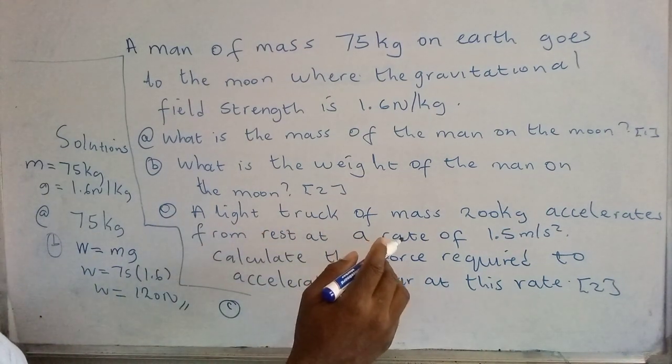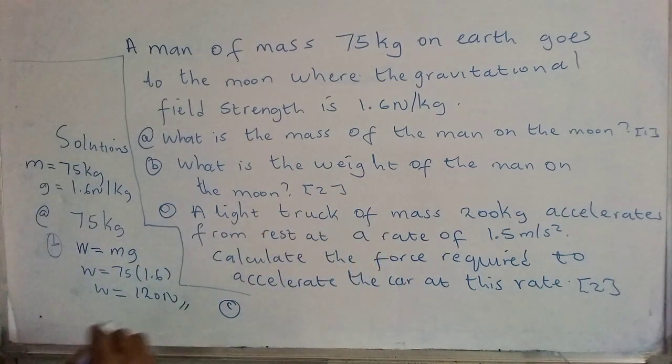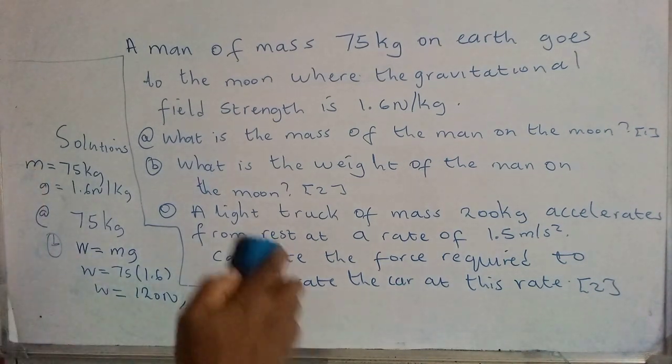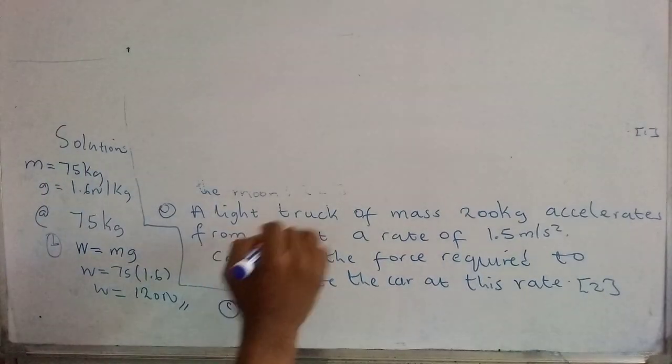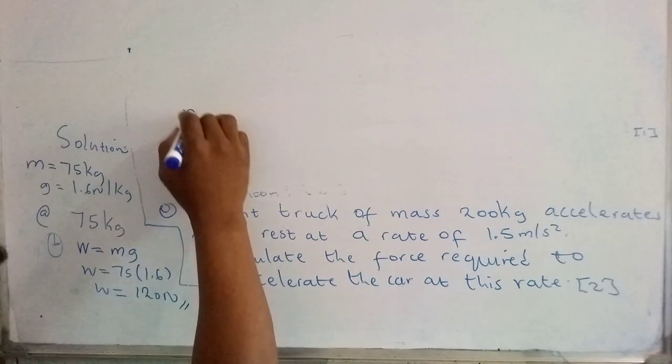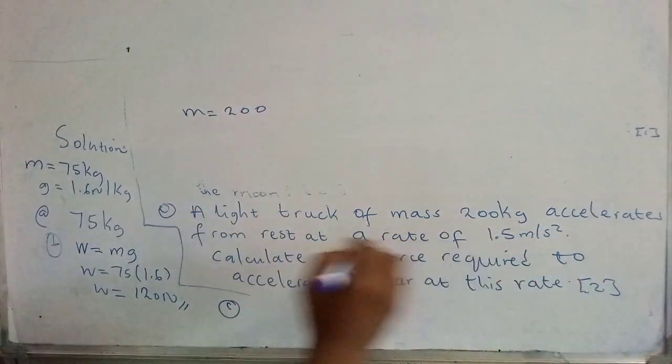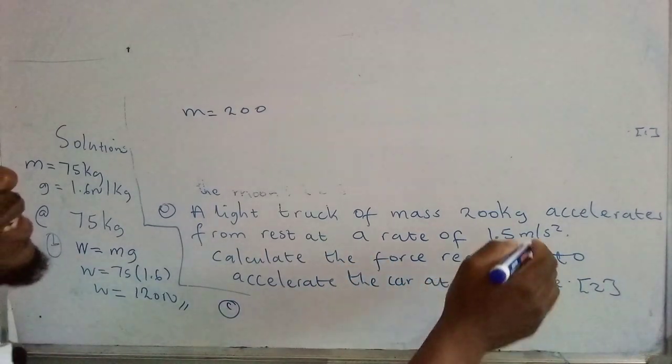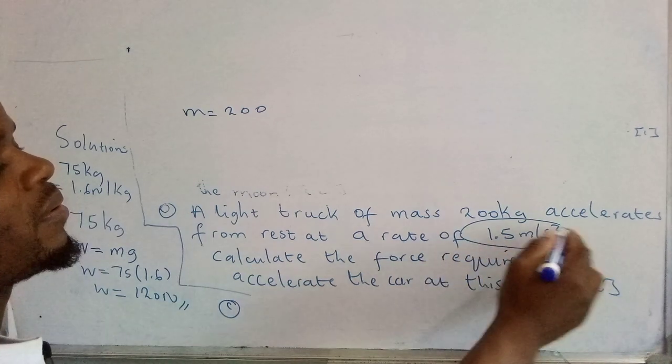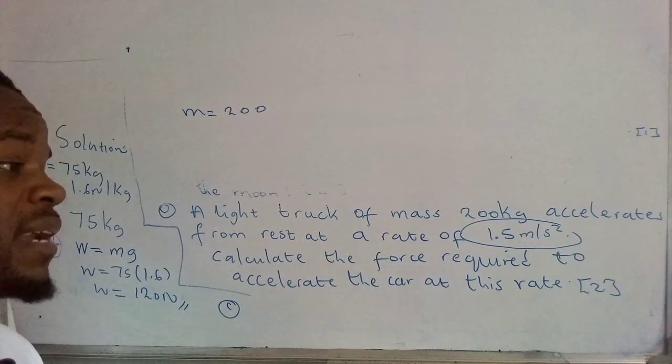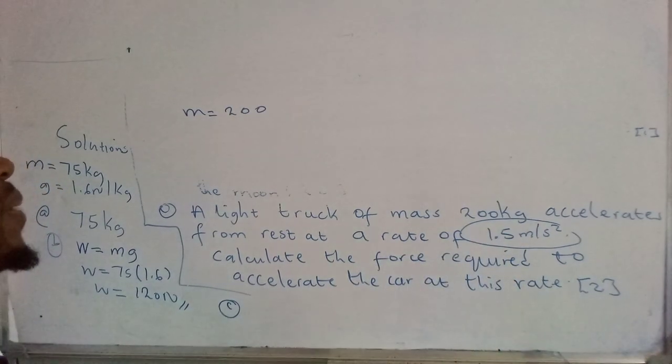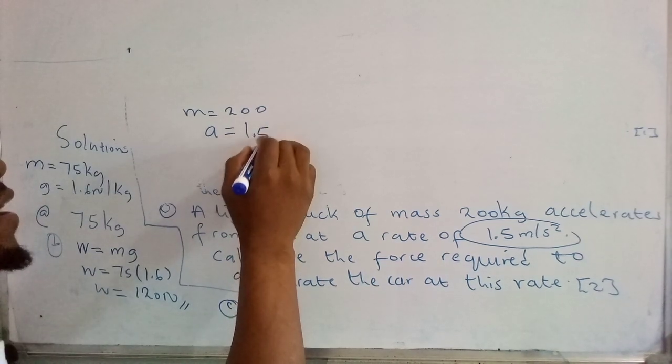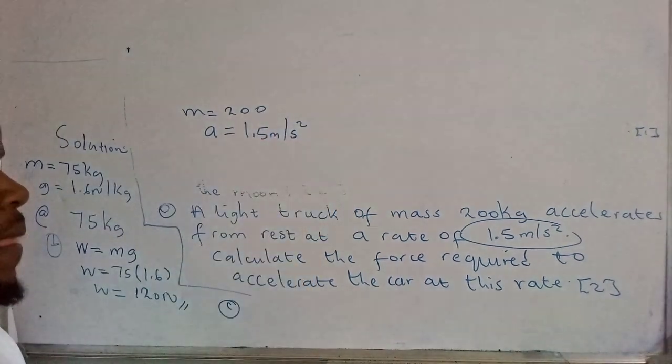They're saying a light truck of mass 200 kg. So we can record mass. Let me rub out what's on top here. A light truck of mass 200 kg, so mass equals 200. It accelerates from rest at the rate of 1.5 m/s². In physics, it's very important for you to know the units because they will help you determine the kind of quantity you're dealing with. What we're dealing with is acceleration: 1.5 m/s².